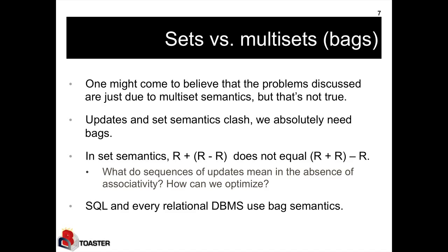So one might believe that the problems we have just seen are just due to the fact that we used multiset semantics, but that's actually not true. Actually, updates and set semantics fundamentally clash, and we absolutely need multiset semantics. So why is that? Because in practice we want to have associativity of updates. I want to be able to apply updates one at a time, or I might be able to batch them and pull them together.